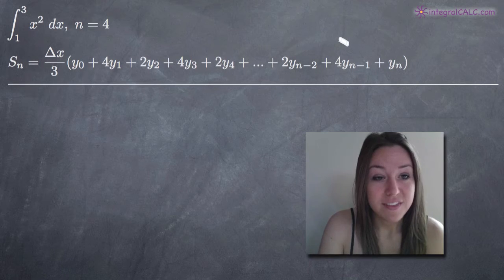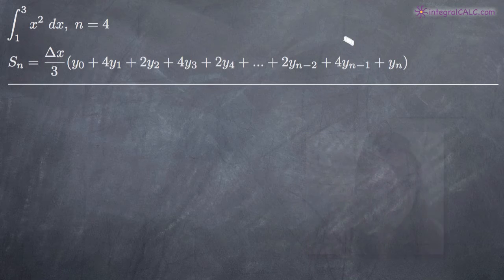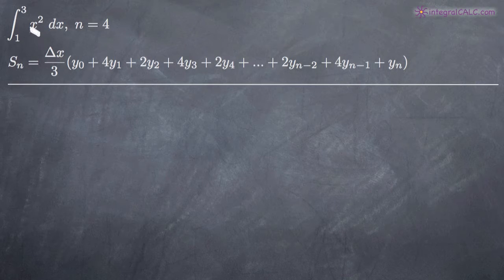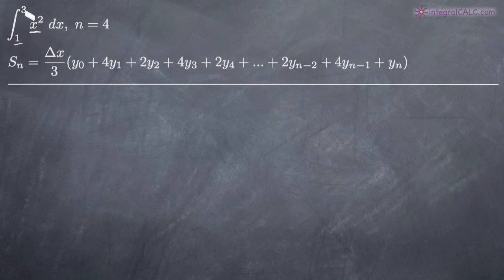Today we're going to be doing a problem with Simpson's approximation. We've been asked to use Simpson's approximation to find the area under the curve x squared on the range 1 to 3. We've been given the integral here, and we know by looking inside the integral that the function we're concerned with is x squared. And because we have these limits of integration, 1 and 3, we know that we're evaluating on the range 1 to 3.